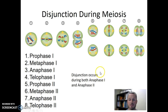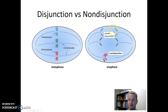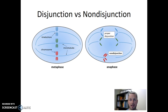In normal meiosis, disjunction should happen during both anaphase one and anaphase two. So what does it mean for non-disjunction to occur? Disjunction is when the chromosomes line up and then are pulled apart. In this diagram, the top two chromosomes show sister chromatids being properly separated — that's normal disjunction. But in the bottom chromosome, the sister chromatids were not properly pulled apart and both are moving towards the left. That's non-disjunction — any time chromosomes do not separate properly during anaphase.